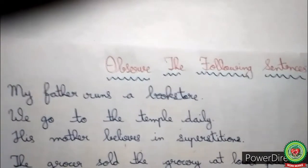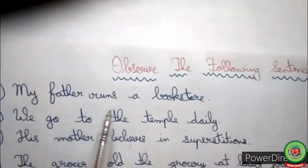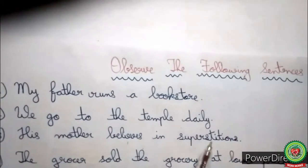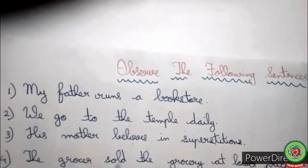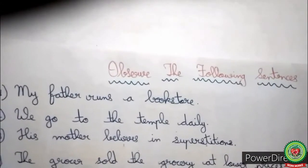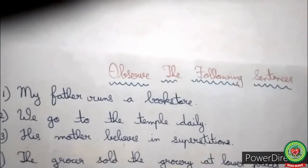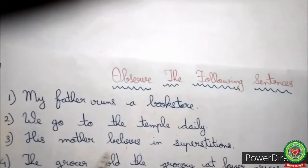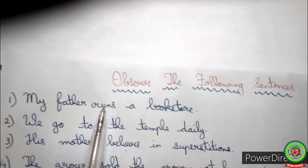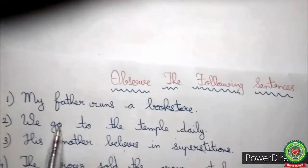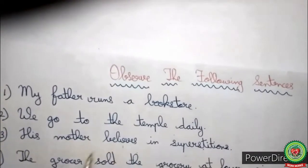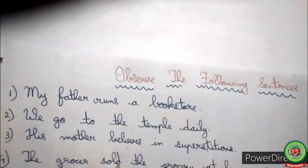Let us understand with the help of more examples. Observe the following sentences: 'My father runs a bookstore,' 'We go to the temple daily,' 'His mother believes in superstitions,' 'The grocer sold the grocery at lower prices.' Do you find something missing? Yes — the helping verb is missing; only the main verb is present. 'Runs' is the main verb in the first sentence, 'go' in the second, 'believes' in the third, and 'sold' in the fourth.